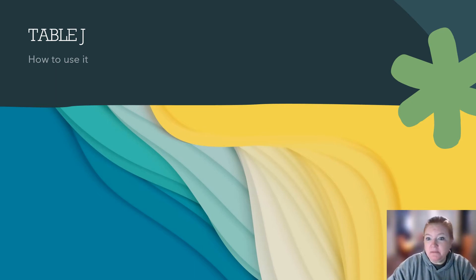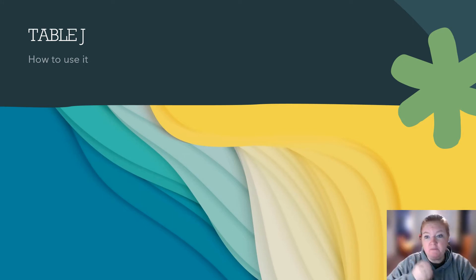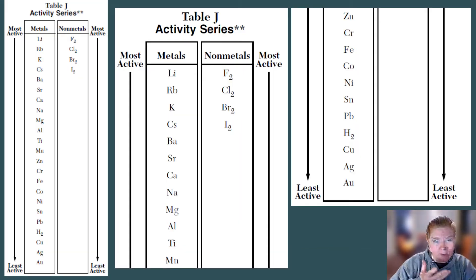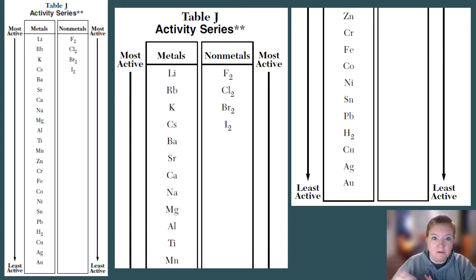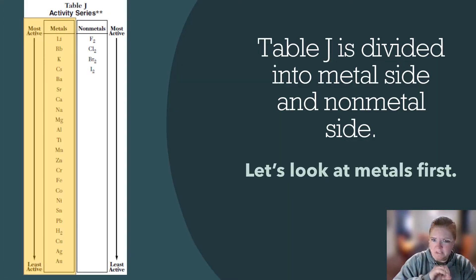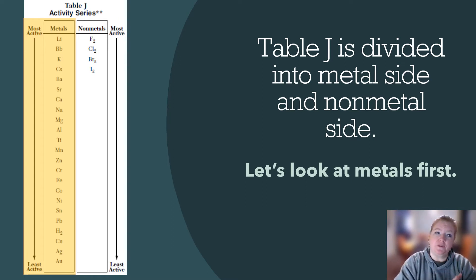We're going to talk about Table J, which is the last piece we need to understand the cumulative part of this unit. Table J shows us activity — it's literally called the Activity Series, and it has arrows from most active to least active. It's divided into a larger metal side and a smaller non-metal side. We're going to focus on the metal side first.